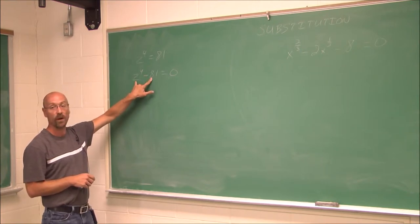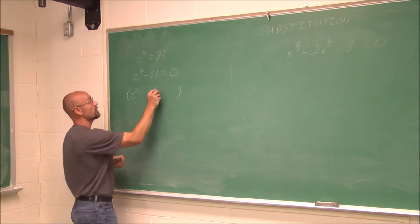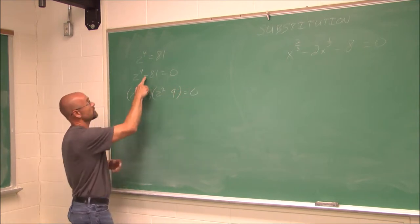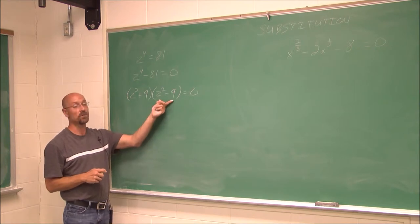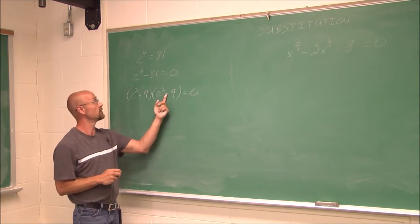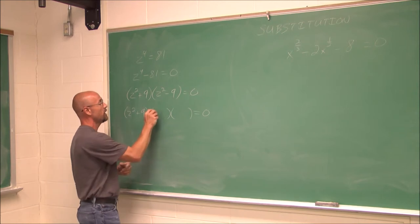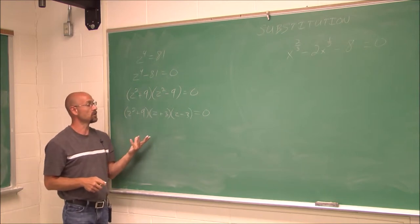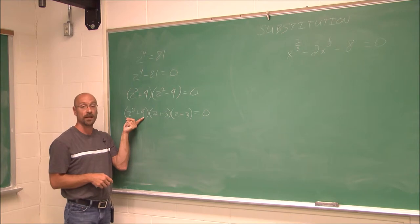Looking at z⁴ − 81 = 0, this is a difference of squares because z⁴ is a perfect square of z², and 81 is a perfect square of 9. Using the sum and difference of terms, I can factor it. Now z² − 9 can be factored further in the real number system, since it's also a difference of squares. So the full factorization is (z² + 9)(z + 3)(z − 3).